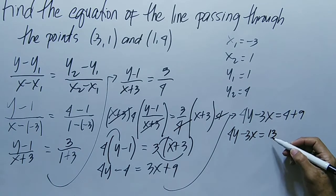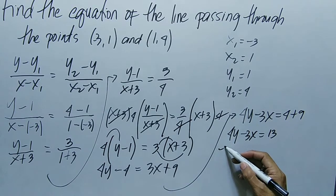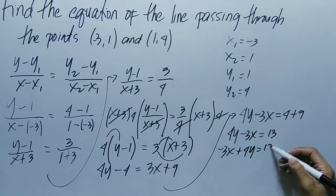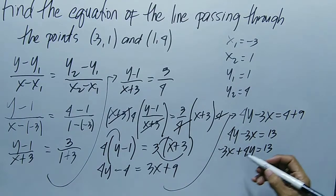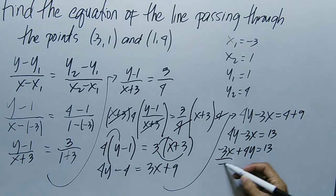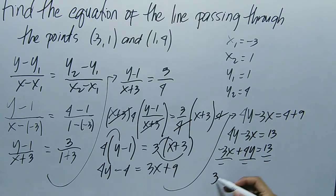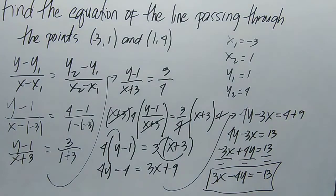Let's rearrange so x is first: -3x + 4y = 13. Since there's still a negative, we have to divide both members of the equation by negative. So our final answer is 3x - 4y = -13. This is our equation of the line.